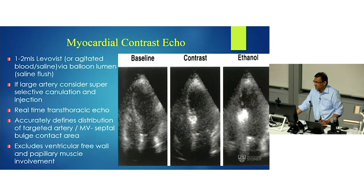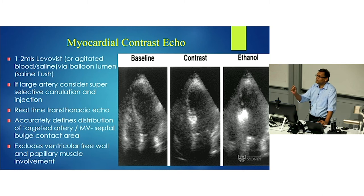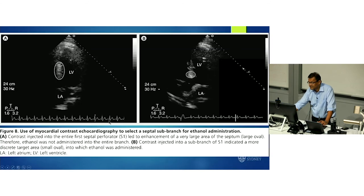Myocardial contrast echo is an invaluable tool to accurately delineate the site of infarction. We now use agitated blood and saline passed through the balloon catheter, which lights up the area to confirm you've targeted the point of mitral valve contact with the septal bulge — your target — while excluding other areas such as papillary muscles, which could cause adverse effects and larger areas of infarction. An initial large septal perforator showing a large area of septum lighting up would be too large and risk ventricular septal defect. Selective cannulation of a smaller branch shows an appropriately sized target area.